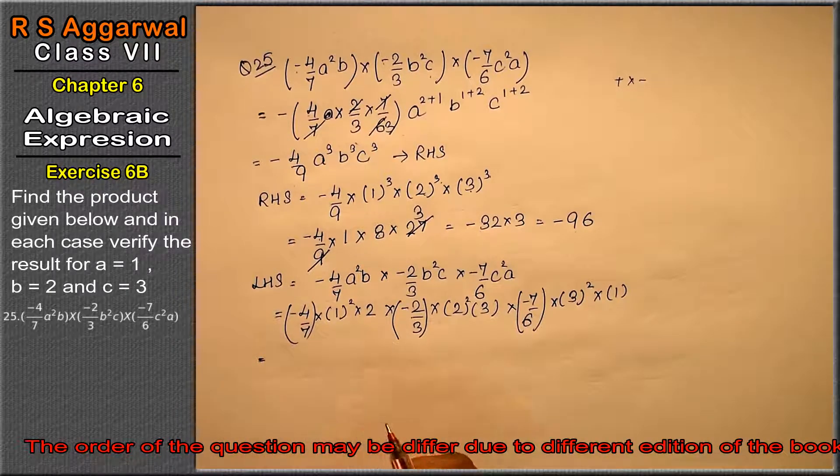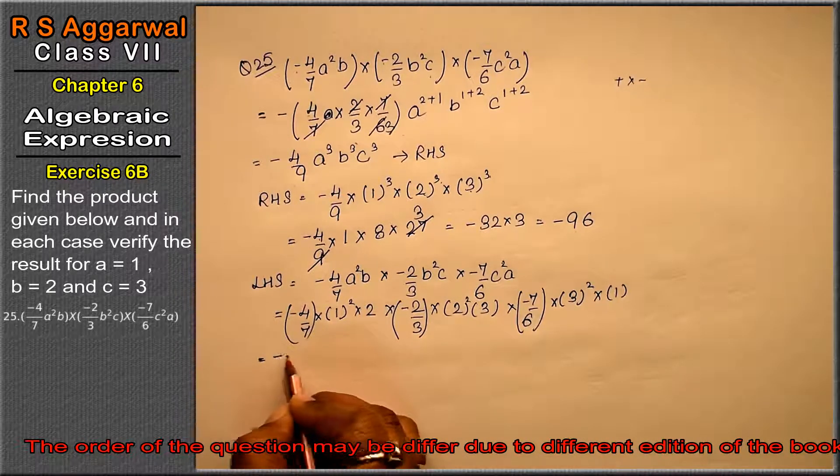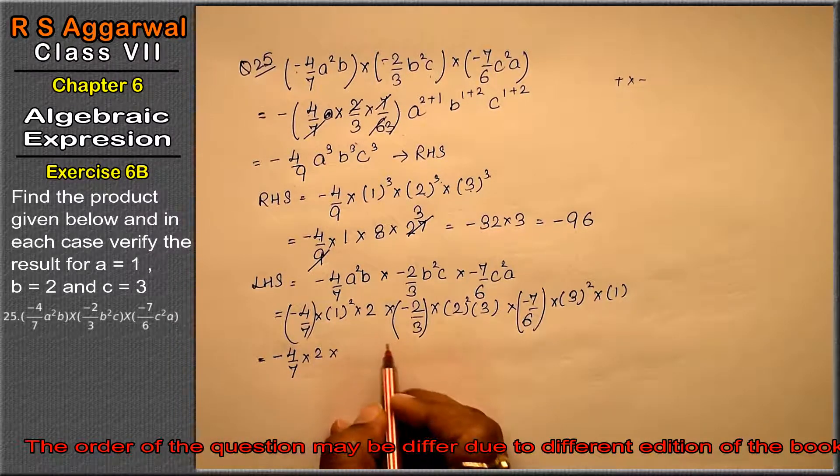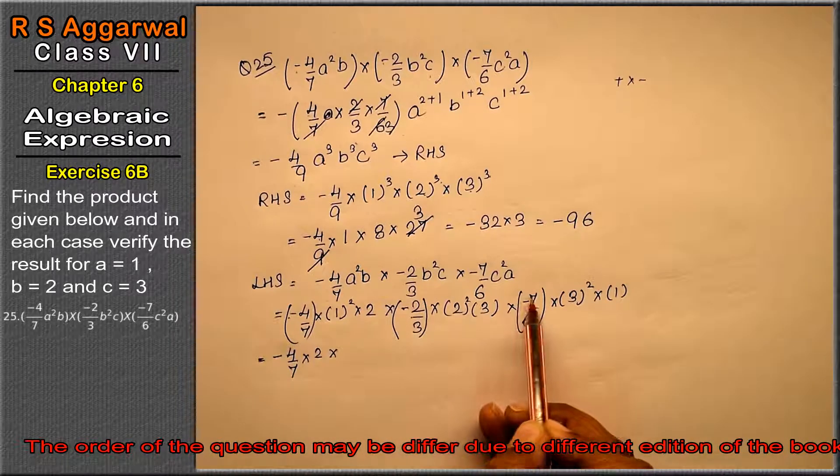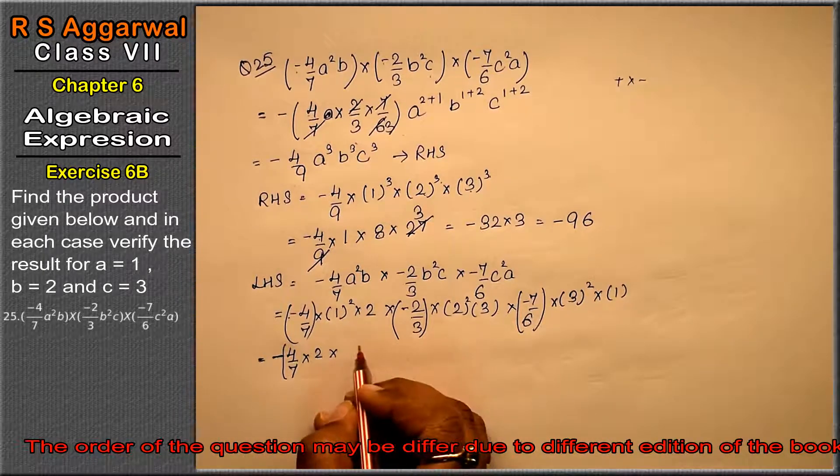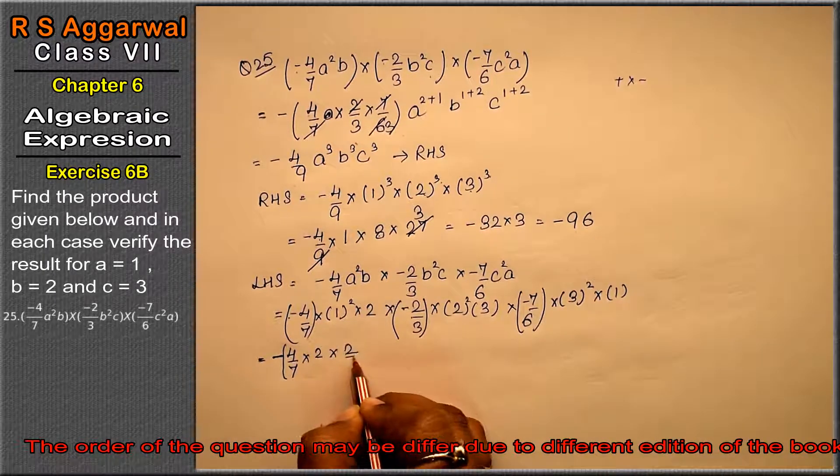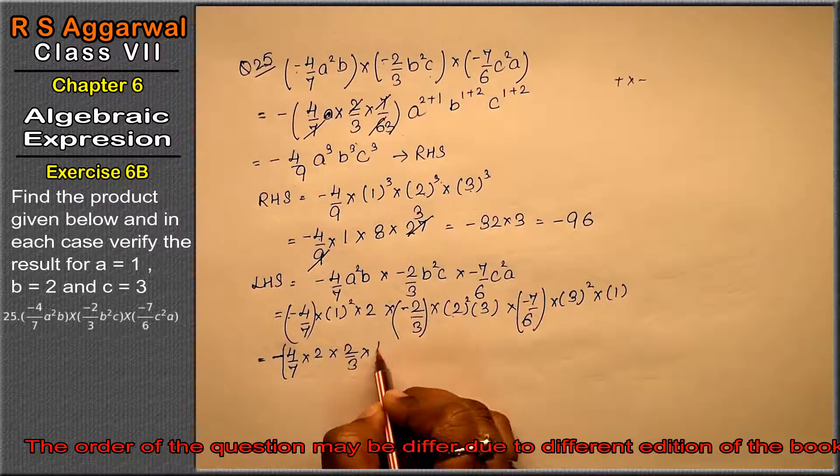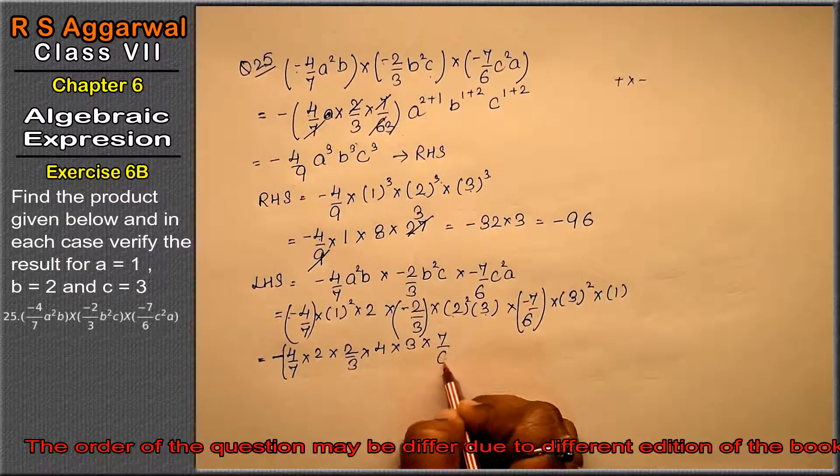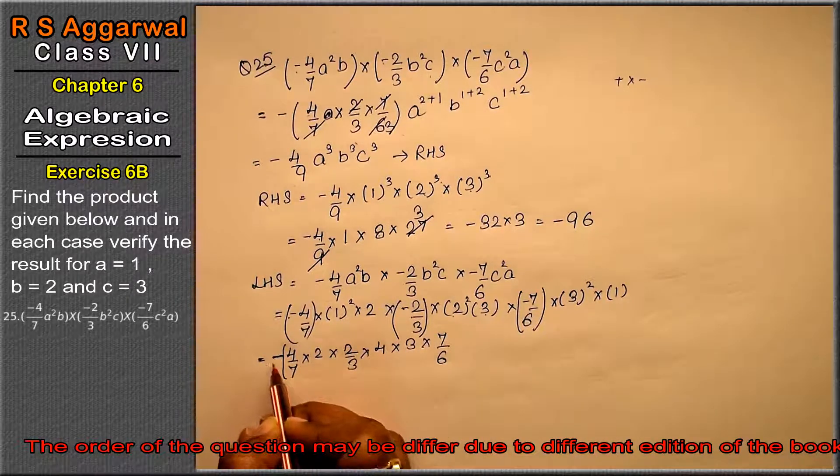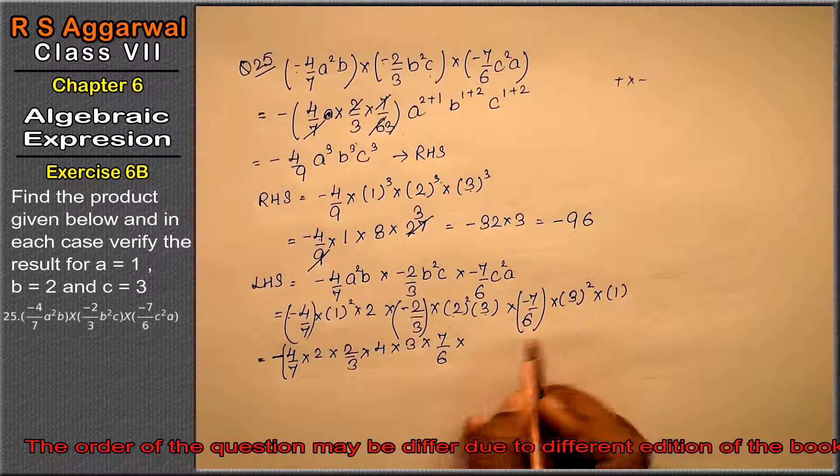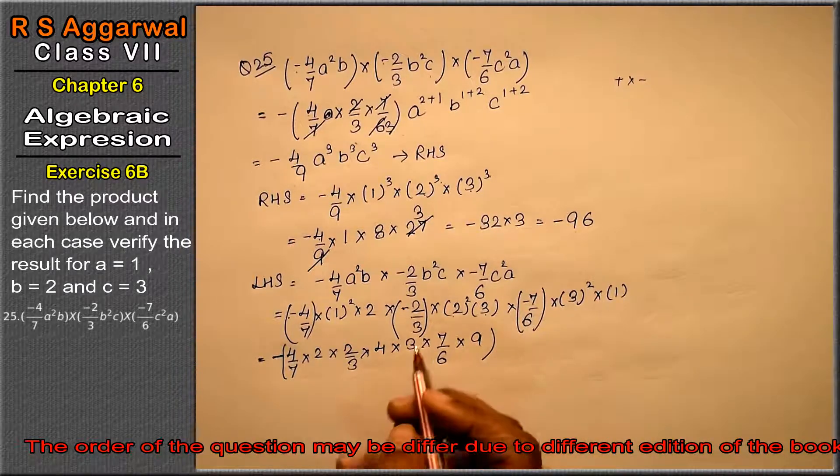Now see, this becomes minus 4 upon 7 into 2 into, see minus minus plus, plus minus minus. So one minus is applied. Now see, brackets here, this is 2 upon 3, 2 to the power 2 that is 4 into 3 into 7 upon 6. Now no sign inside. We have solved the sign outside. 3 to the power 2 means 9 into 1 which is 1.